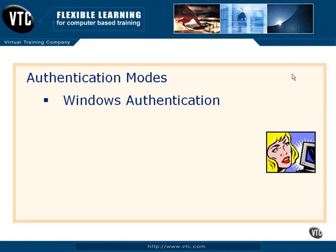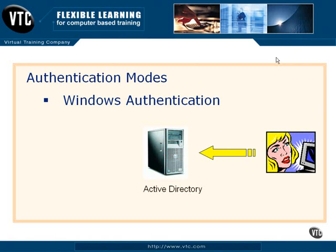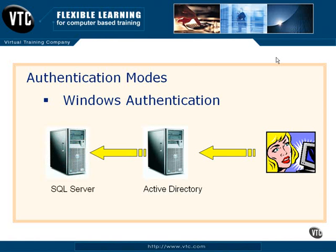With Windows authentication, think about what's happening. We've got users out there who log in to Active Directory. If Active Directory has already determined who this user is and what capabilities they should have on the network — what resources they can access — well, we've already authenticated them. So why should SQL Server have to go through that process all over again? In Windows authentication, we map groups from Active Directory onto SQL Server, and SQL Server gets into a trusting relationship with our Active Directory domain.